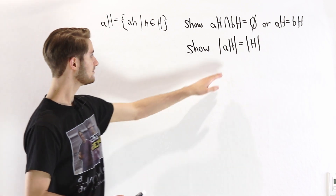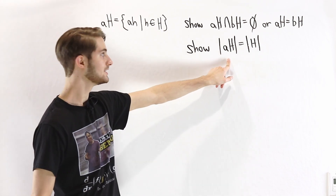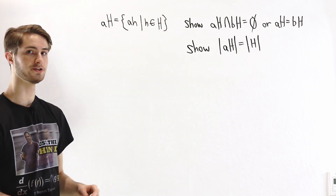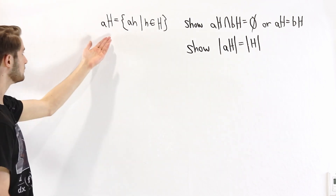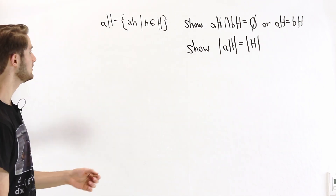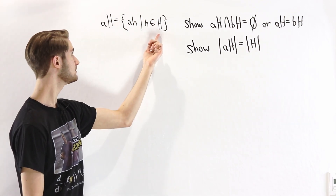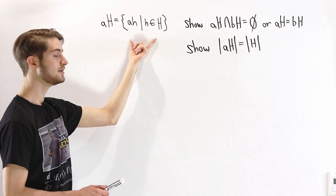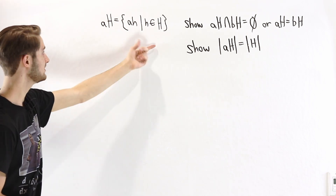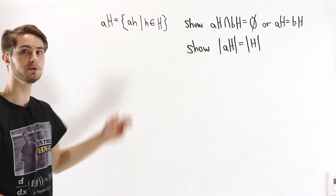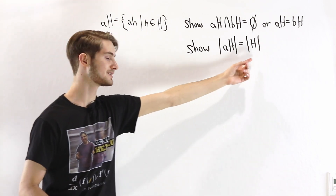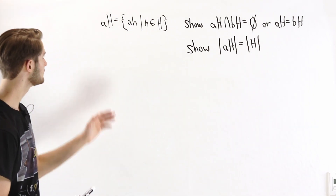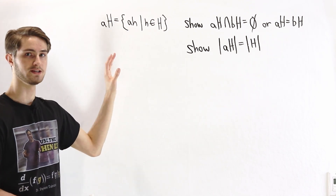Next we want to show that every single coset aH has a size equal to the size of that original subgroup H. Notice that the way we construct a coset is by taking every element of the subgroup and multiplying it by a. So naturally we'd expect the number of elements in aH to be the same as the number of h's we use to create the coset, which is the size of H. There's one other thing we have to check: are there any repeat elements?